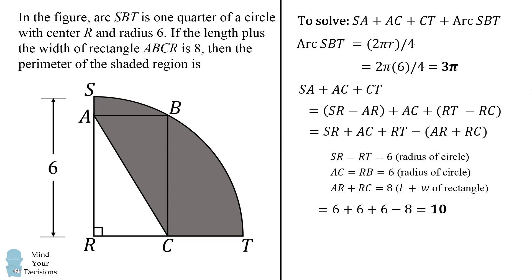So we put these two parts together to get that the perimeter of the shaded region is equal to 10 plus 3π. And that's answer choice B. Did you figure it out? And what method did you use?